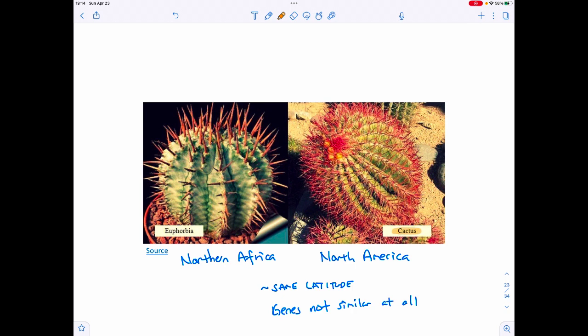We also get these convergences. The thing on the right is a cactus. The one on the left, which looks like a cactus, is actually called a euphorb. They're found in northern Africa, whereas the cactus is a North American phenomenon. They're about the same latitude. But if you check out their genes, they're not really the same. They didn't move—they just happened to come up with the same solution in the same spot, which is interesting.